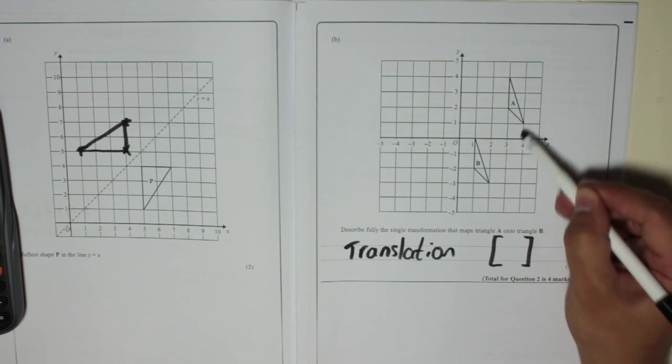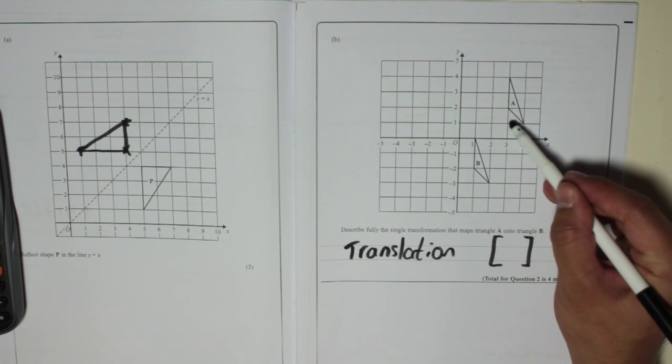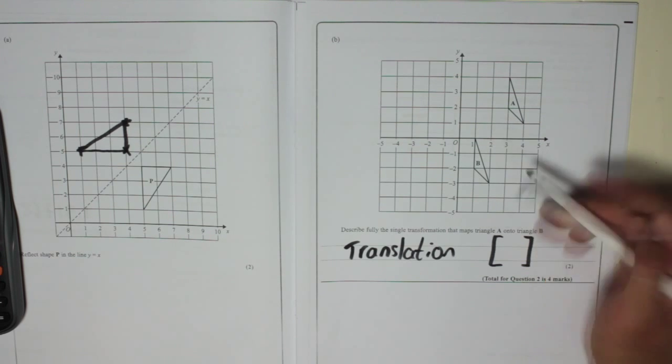Choose a point and see how far it is from the same point on the other one. So if you look, you're going to go left two, so that's minus two here.